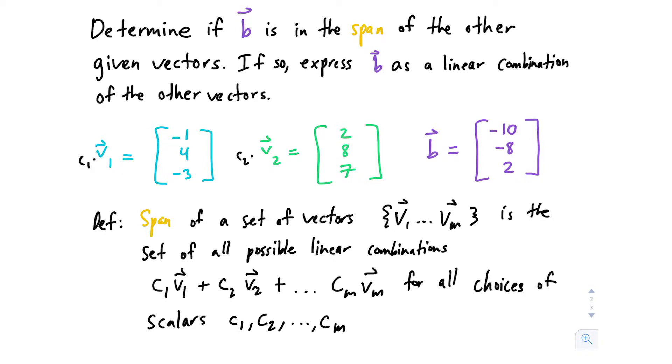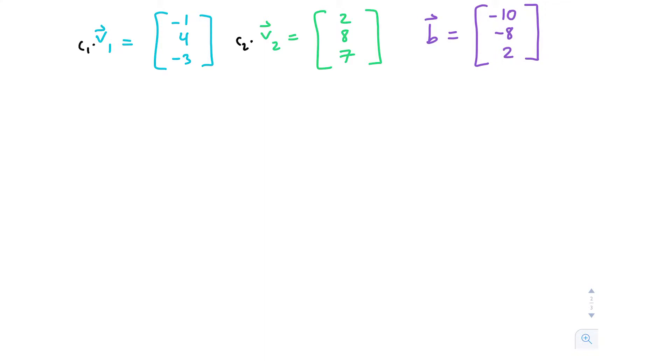Let's set up our matrix. We have negative 1, 4, negative 3, then 2, 8, 7, and negative 10, negative 8, 2. Just like before, I can't just look at this and tell you here's a number, here's another number, those two add up to make B.